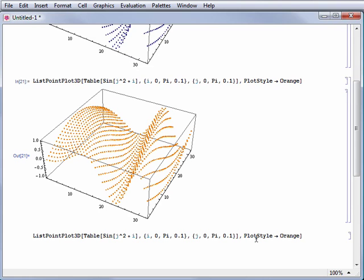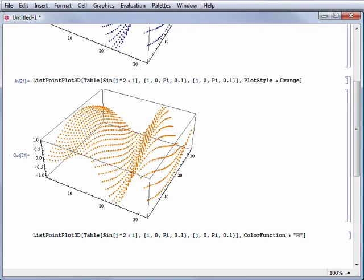You can also use color gradients with 3D plots. Use ColorFunction to implement a predefined color gradient in the Z direction.